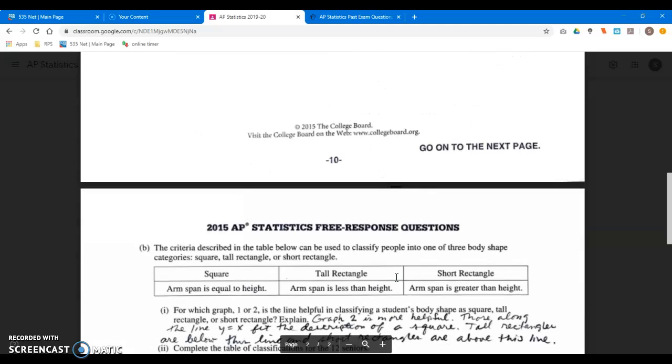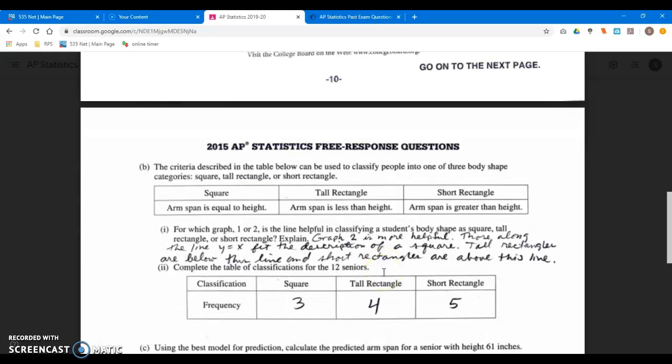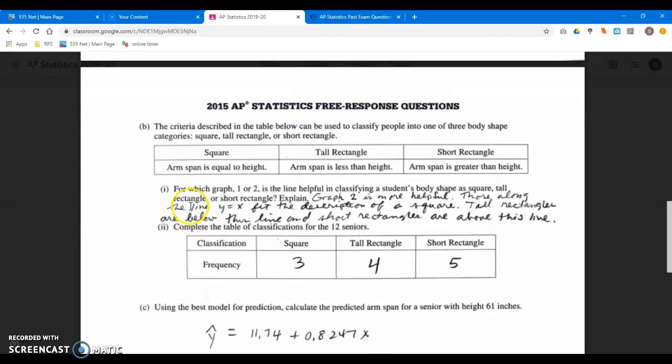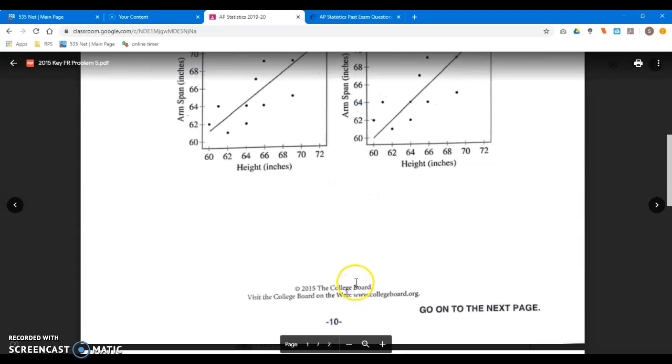So we got one, two, three, four that fit the description of a tall rectangle. Now, what are you - a tall rectangle, a short rectangle, or a square? Let's see. I think I'm actually a short rectangle. Is that okay to be a short rectangle? You actually are asked to fill out the table - how many of each of those are. But first, they ask you the question: which graph is most helpful in deciding if a student is a square, a tall rectangle, or a short rectangle?